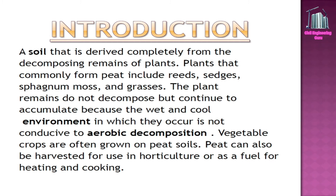A soil that is derived completely from the decomposing remains of plants. Plants that commonly form peat include reeds, sedges, sphagnum moss, and grasses. The plant remains do not decompose but continue to accumulate because the wet and cool environment in which they occur is not conducive to aerobic decomposition.